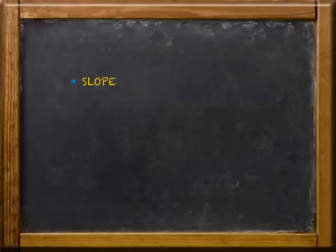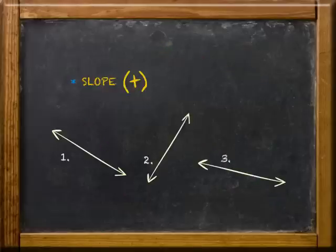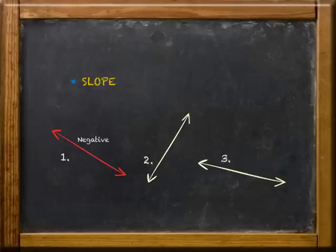Let's try a few. Have a look at these three lines. Think about each line and whether its slope is positive or negative. Let's check these out. The first one has a negative slope. The second one is positive. The third one's slope is negative. How'd you do?